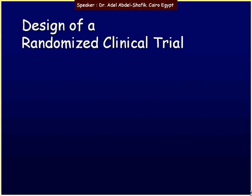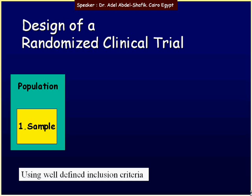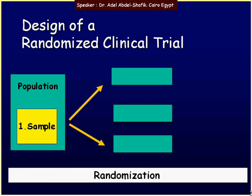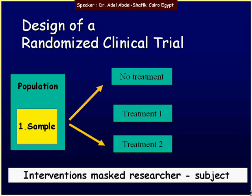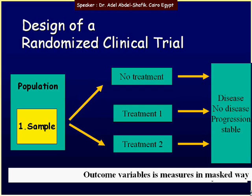To design a randomized clinical trial, we start by collecting a sample from the population using well-defined inclusion criteria. Then the sample is randomized into different arms, like no treatment, treatment one, or treatment two. It's better that the intervention is masked for both the researcher and the patient. Then follow-up will take place, waiting for the appearance of a special outcome, like no disease or disease, progression or stability. It's better that the outcome variable is measured in a masked way.